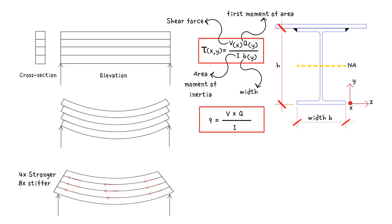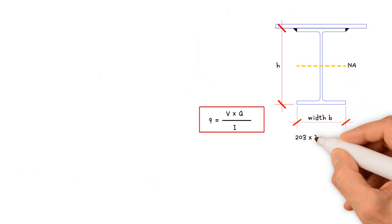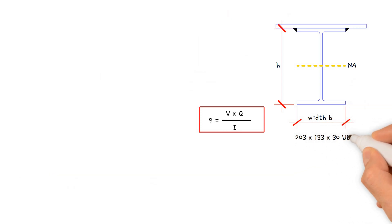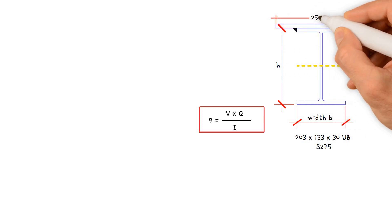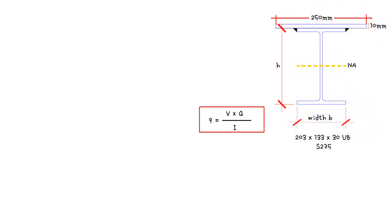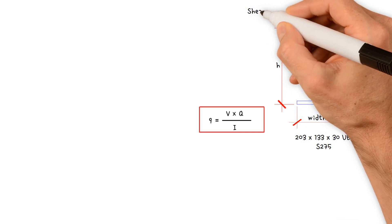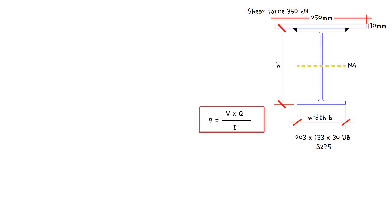Let's look at a real-world example. A 203 by 133 by 30 universal beam S275 is strengthened by welding a steel plate 250 mm wide and 10 mm thick to its top flange. The composite section is subjected to a designed shear force of 350 kN. What size continuous fillet weld is required between the beam and the plate? First, we need to determine the section properties: the neutral axis location and the moment of inertia I of the entire cross-sectional area about the neutral axis.